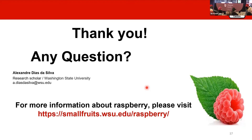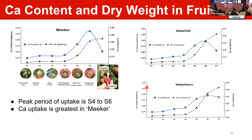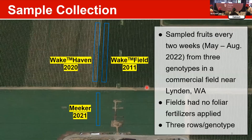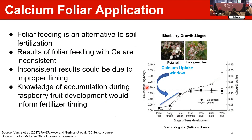Question: In blueberries, does the plant pick up the most calcium as a foliar spray or as a soil drench? Answer: The most calcium uptake comes from the soil when compared to foliar feeding. Growers do try to apply calcium to improve fruit quality and shelf life, but the timing is not yet consistent. This paper found the best time is between petal fall and late green fruit.